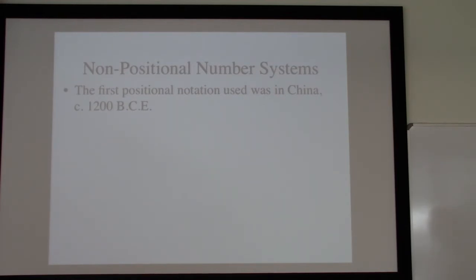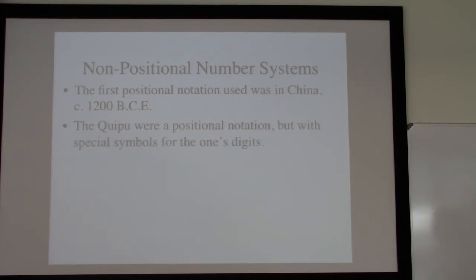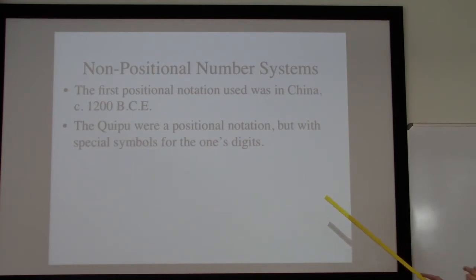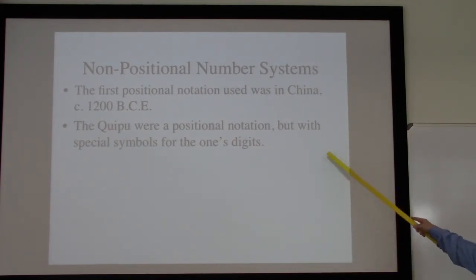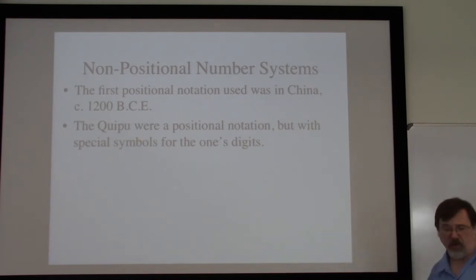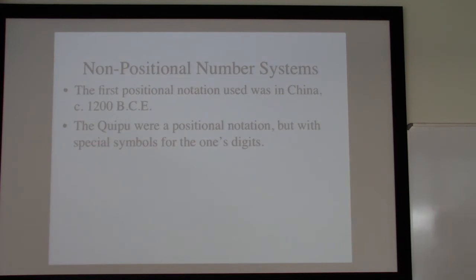There's some stuff happening in Babylonia at this time as well. The quipu that we know from the Mayans is a positional notation — two overhand knots representing the number two could be 20 or 200. It's not a true positional notation though, because we have some special symbols for the ones digits. The two overhand knots can be 20, 200, or 2000, but cannot be a 2.